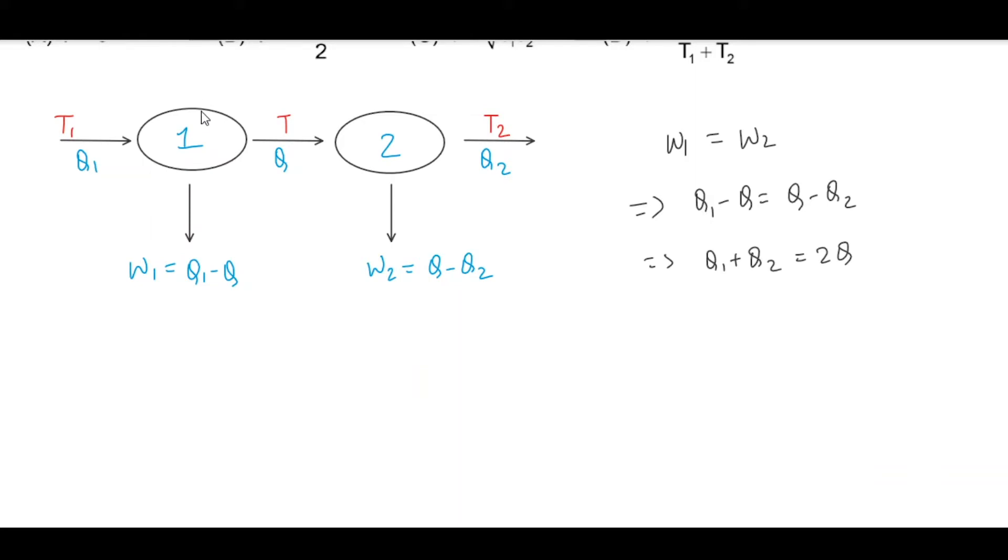For a Carnot engine, the heat supplied to heat rejected ratio is equal to the ratio of temperatures of source and sink. For a Carnot engine, we can write: T1 by T is equal to Q1 by Q, and T2 by T is equal to Q2 by Q. These two relations are valid.